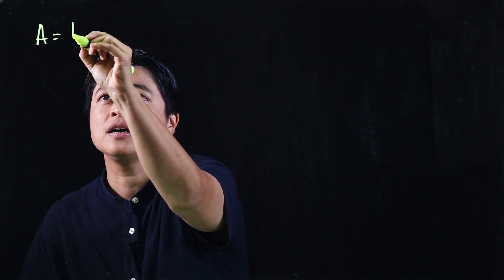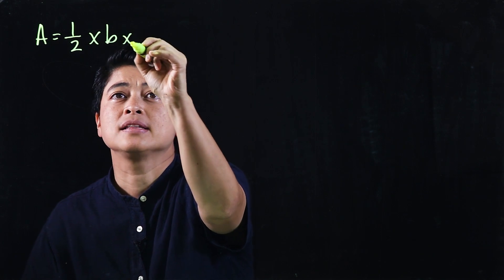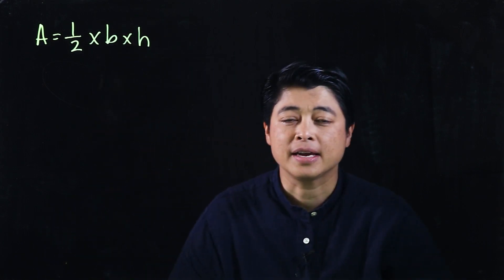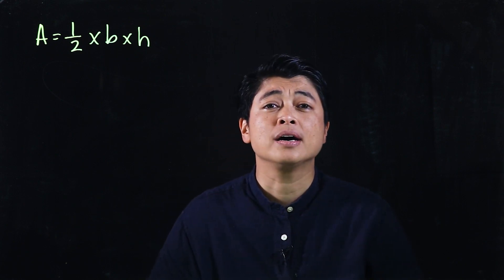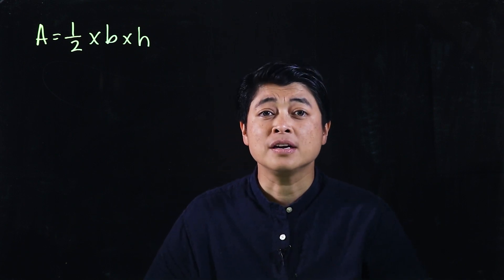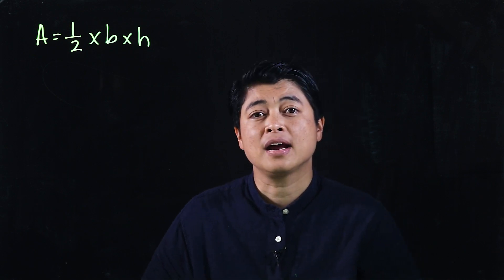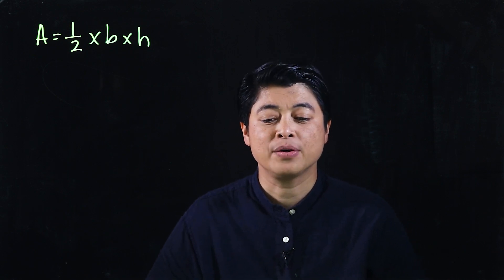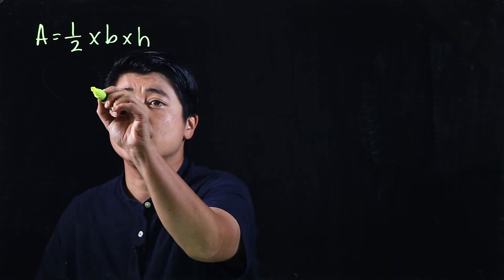We should know that the area of a triangle is one half times base times height. This is in addition to the formulas that we learned in grade 4, which are area of a rectangle and area of a square.